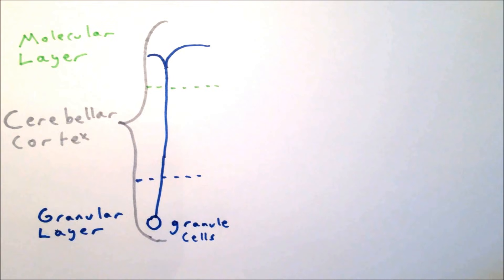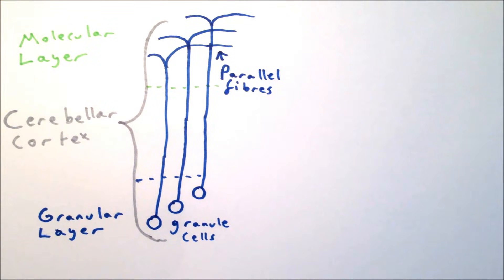Once here, the axons split into two and head off in two opposite directions. The axons of neighboring granule cells line up, forming parallel lines, and for this reason they are called parallel fibers.